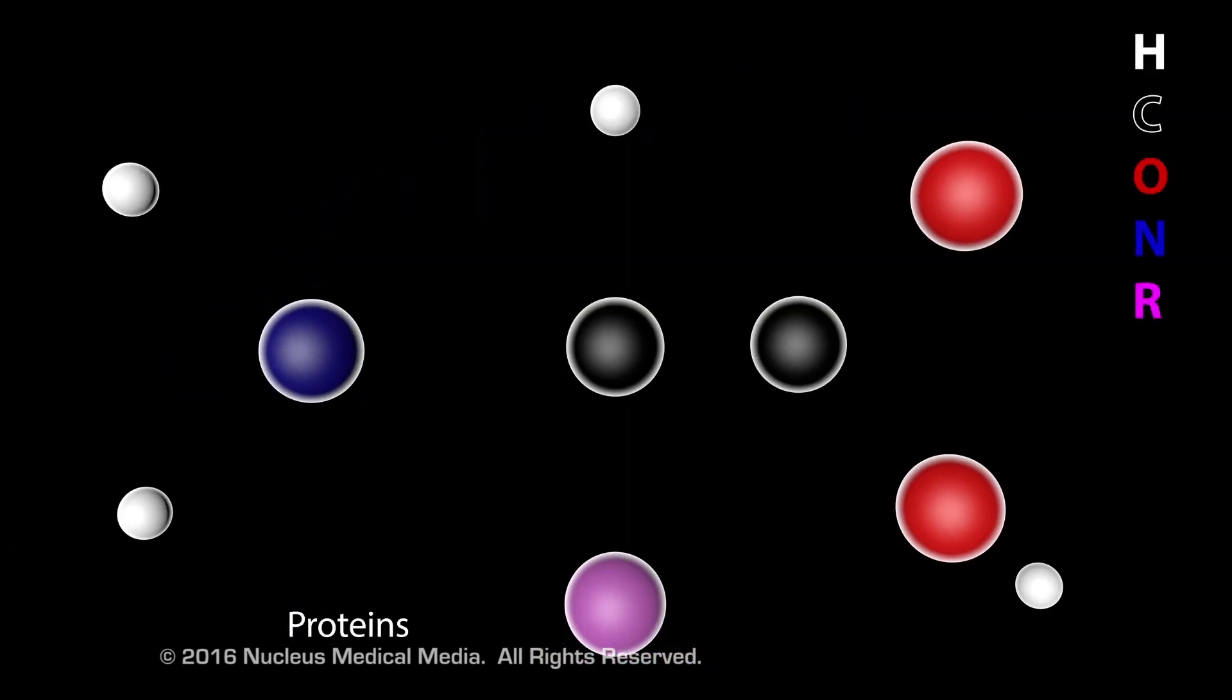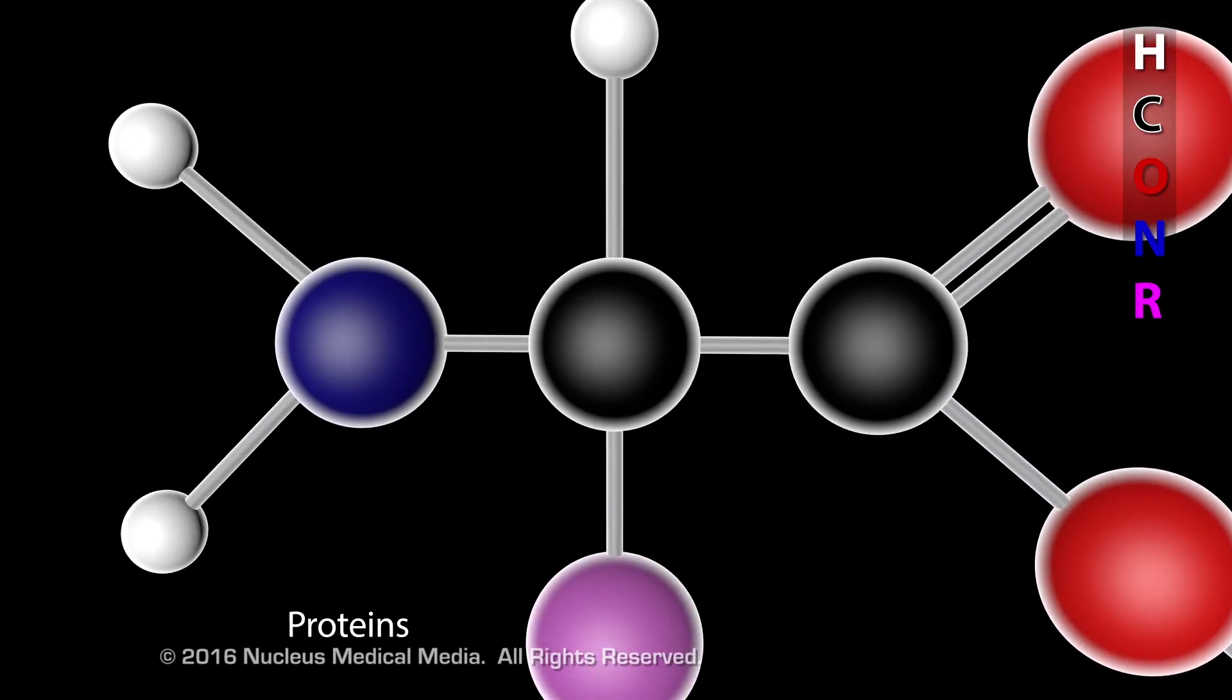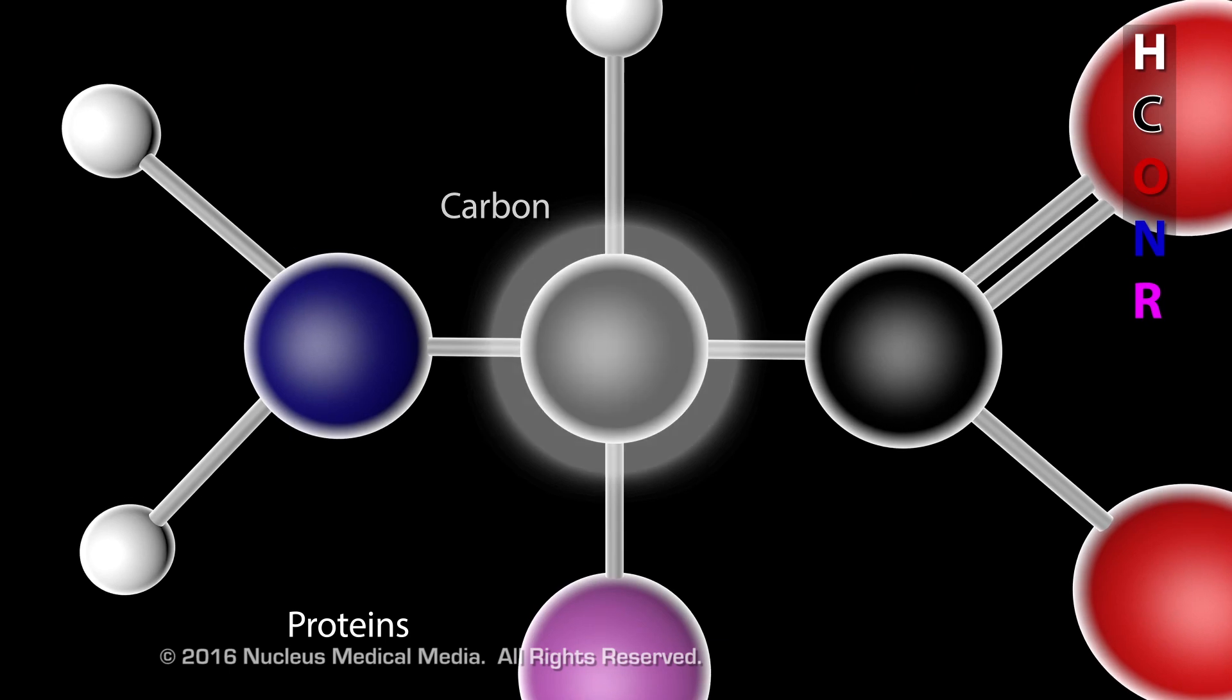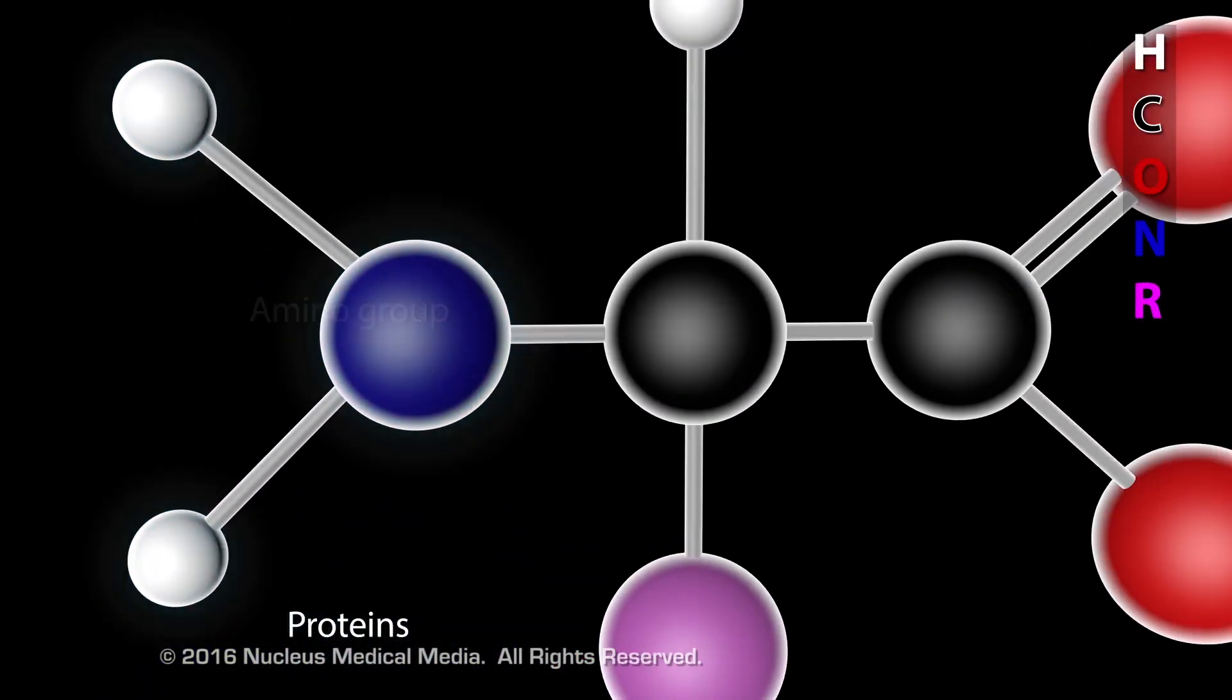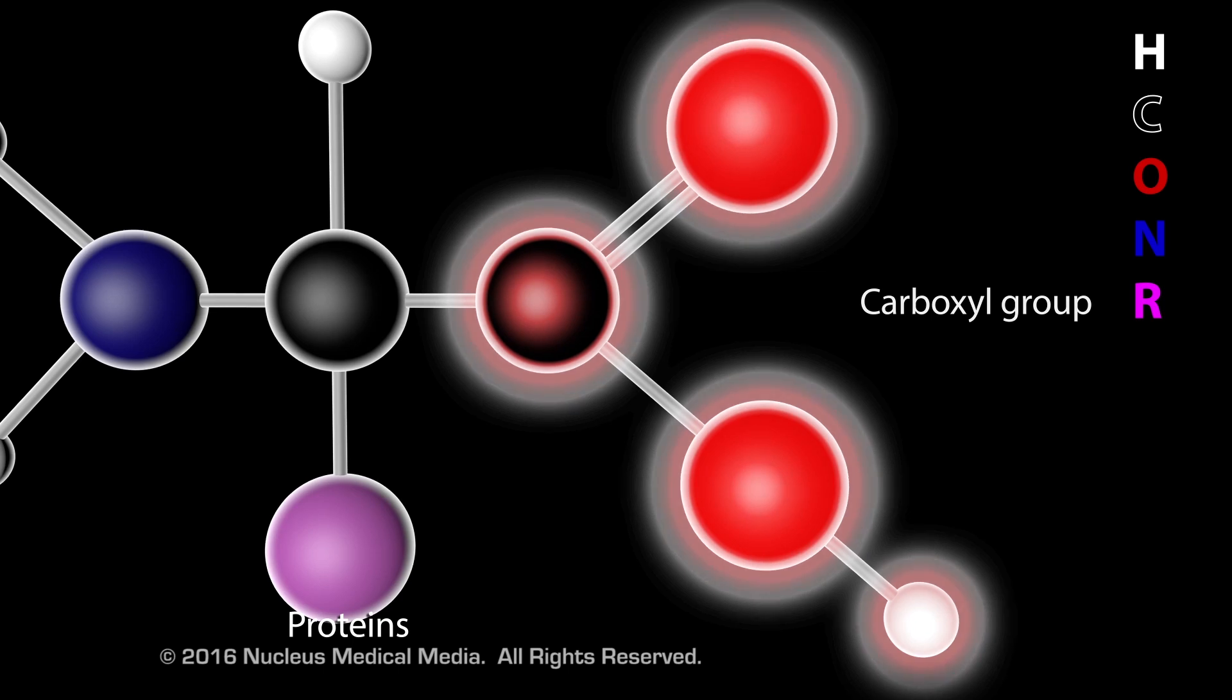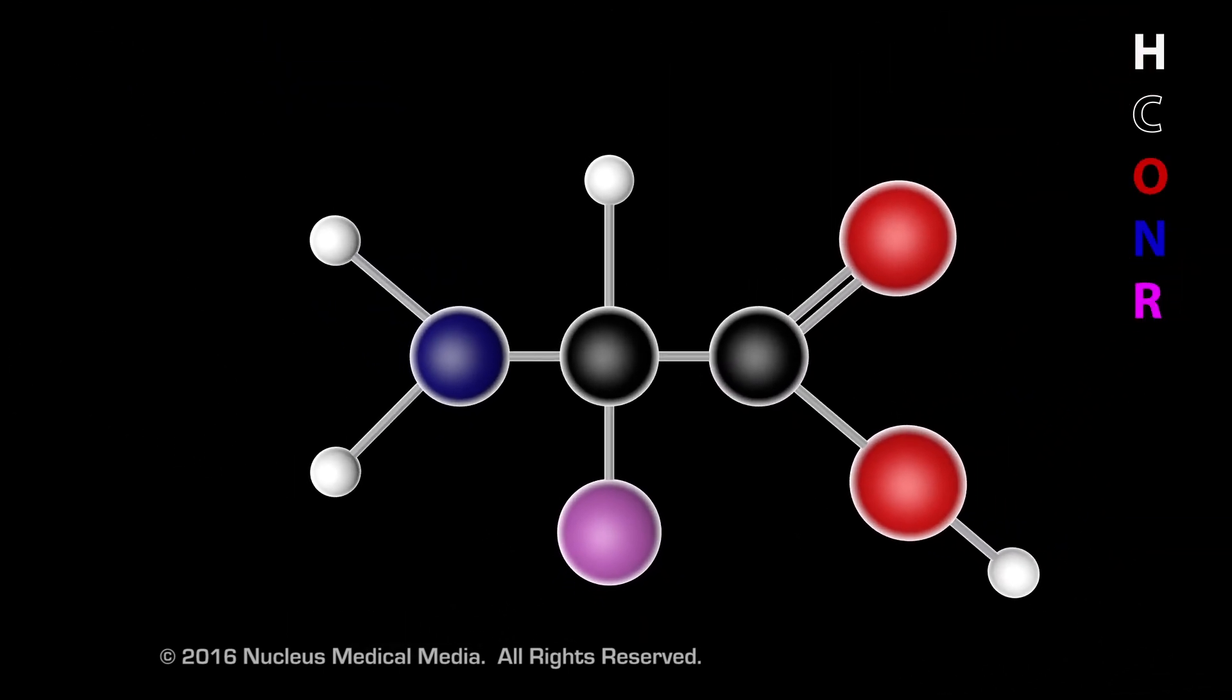Proteins are chains of amino acids. All amino acids consist of a central carbon atom connected to a hydrogen atom, an amino group, and a carboxyl group. The radical group differentiates each amino acid.